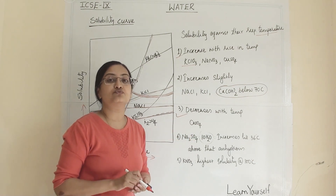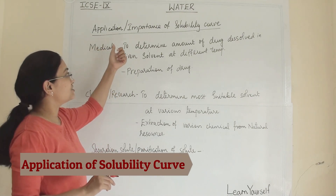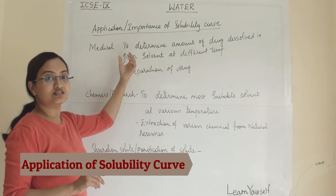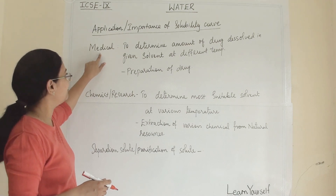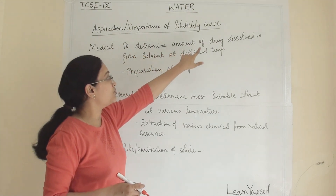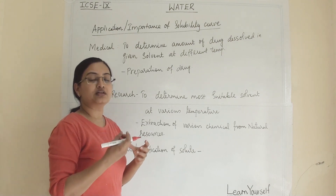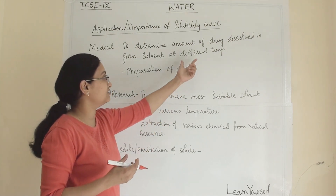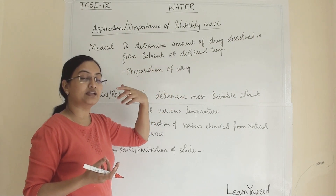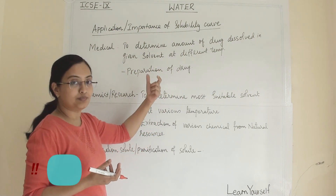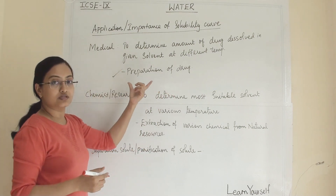Now we will look at why we study solubility curves and their importance. In the medical field, solubility curves are used to determine the amount of drug dissolved in a given solvent at different temperatures. For example, when preparing a syrup by dissolving a drug substance, solubility at various temperatures is checked using the solubility curve.